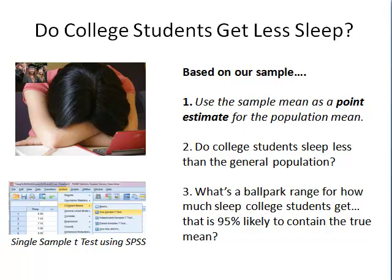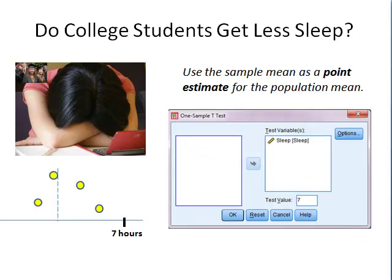So we know going into this that there's going to be some error involved. With that in mind, we'll go ahead and use SPSS. We'll click on Analyze, and then from the drop-down menu select Compare Means, and then One Sample t-test. When the dialog box comes up, we take our sleep variable and move it over to the test variables. For the test value, we're going to put in what we're comparing college students to — in this case the United States adult population — and recent research shows they're getting seven hours of sleep each night on average.